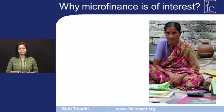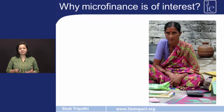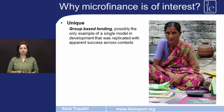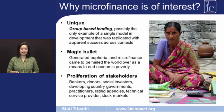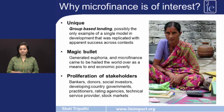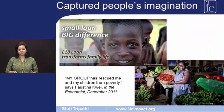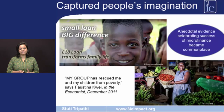Microfinance as we all know is extremely unique. The group-based lending model of microfinance is possibly the only model in the development sector which has been replicated with success across contexts. This success in fact led to microfinance being seen as a magic bullet to end economic poverty, and in turn led to a proliferation of stakeholders — with donors, social investors, and technical service providers jumping onto the bandwagon of microfinance. Microfinance captured people's imagination and anecdotal evidence celebrating its success became commonplace.